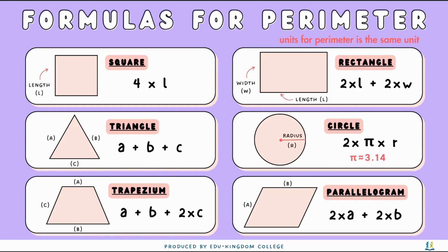For a square, the four lengths are the same, so the perimeter of a square is going to be 4 times the length. Whereas for a rectangle, the two lengths — the two longer sides — are going to be the same, and the two widths — the two shorter sides — are going to be the same.